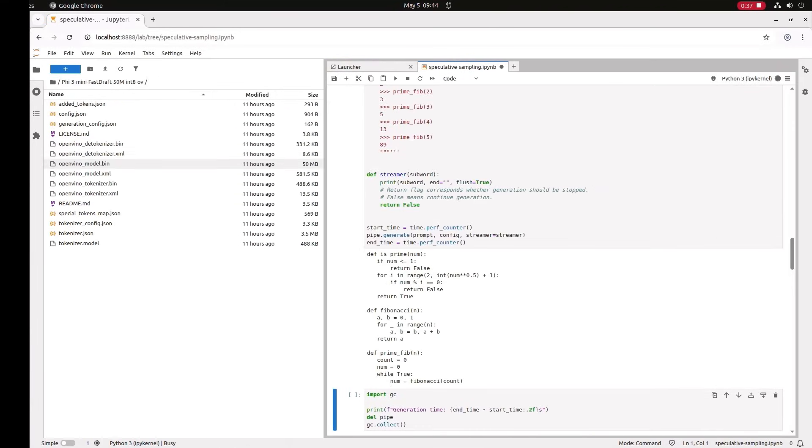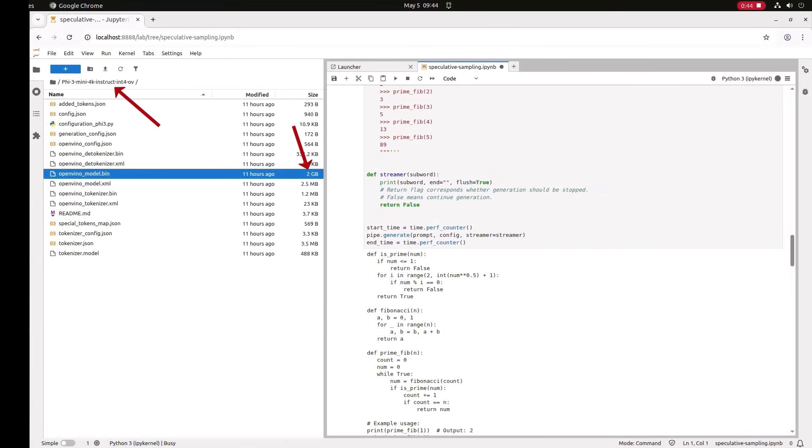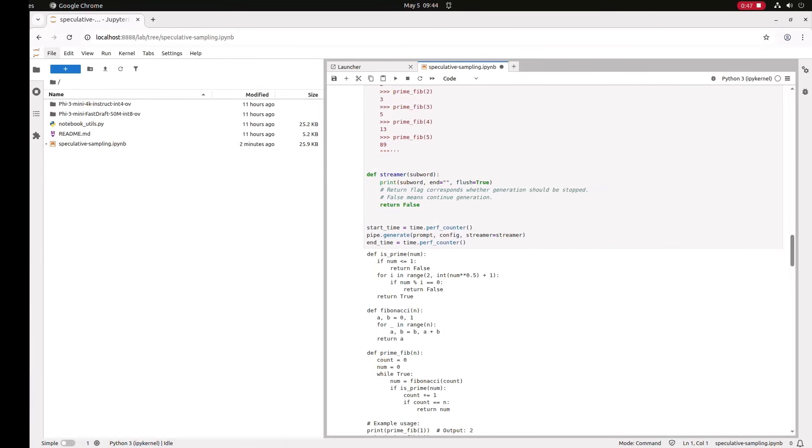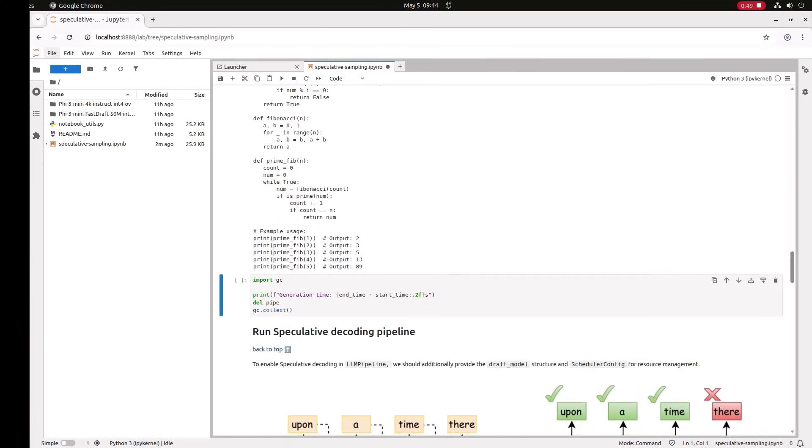Let's look at the two models. This is the fast draft model. It weighs only 50 mega. And this is a large model, 2 gigabytes. A huge difference. The inference took us 18 seconds.